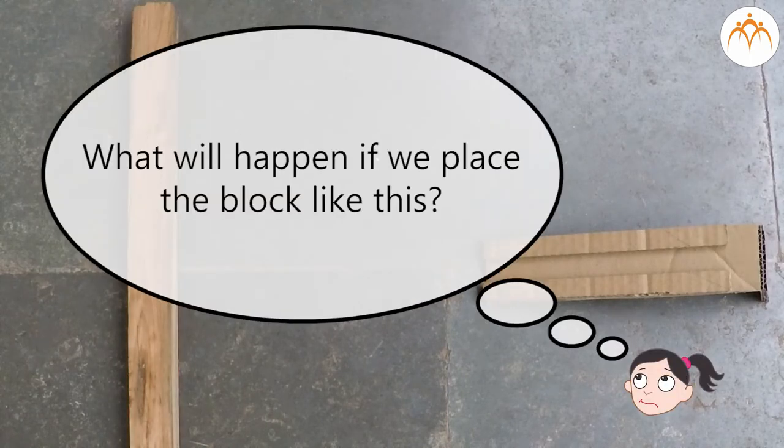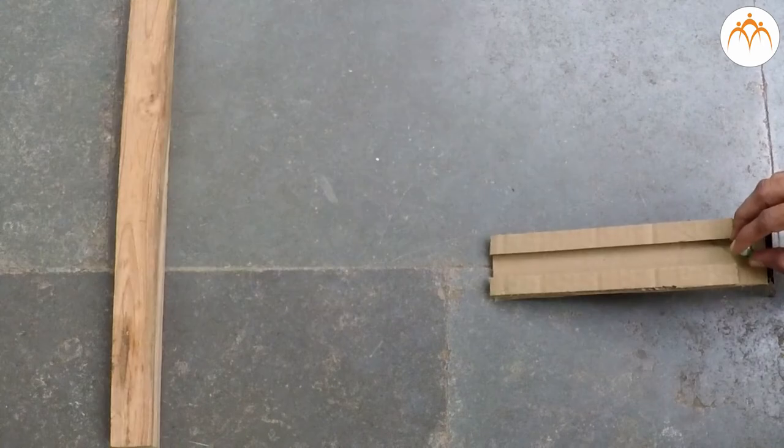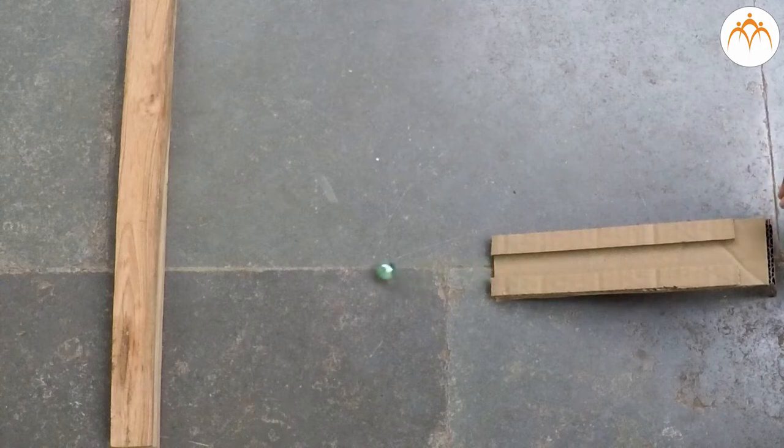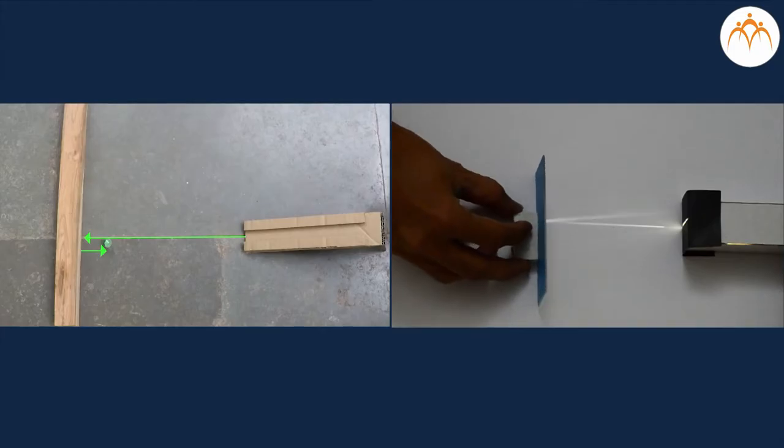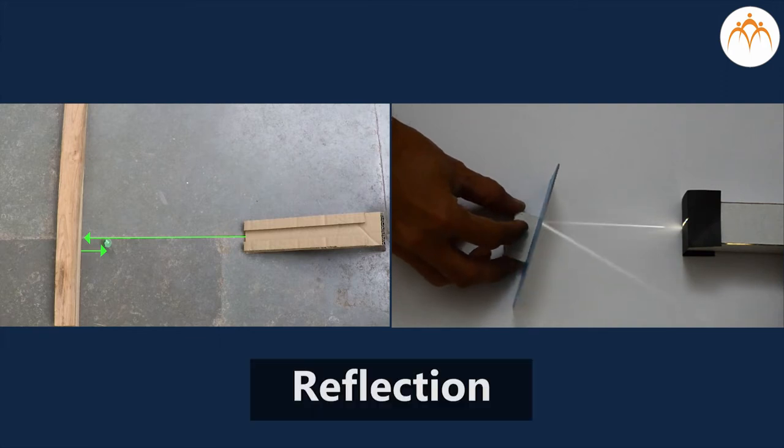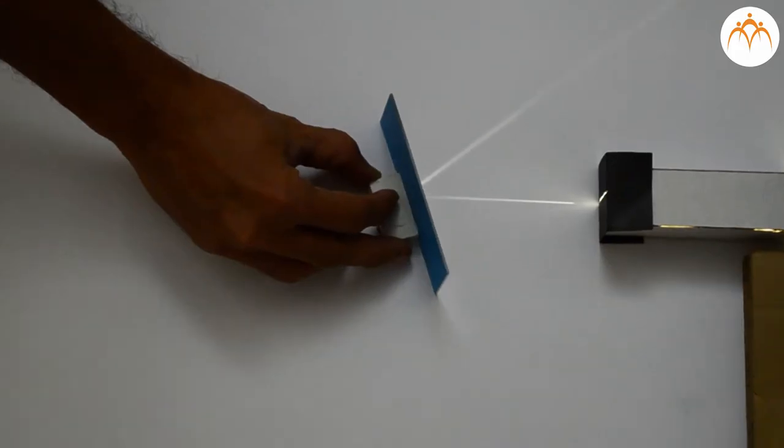Marble follows a different path after hitting the wooden block. When a beam of light hits the mirror it bounces back just like a marble bouncing off the wooden block. This is called reflection. When light is reflected it changes direction.